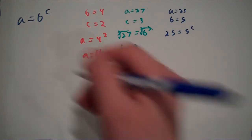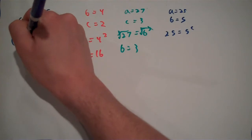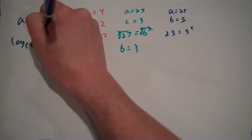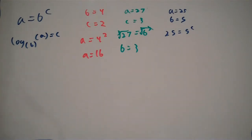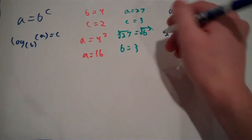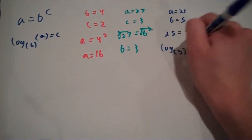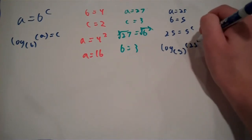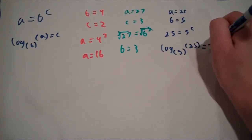A logarithm works by: we take the log of base b of a, and that gives us c. So log base b of a equals c. If we're to use that here, we have the logarithm base 5 of 25, and that equals 2.